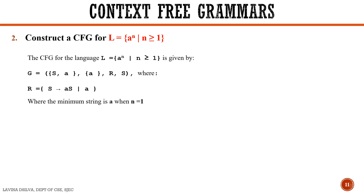We can conclude the grammar as G equals V sigma R S, where V equals {S, A}, sigma equals {A}, and the rule set R equals {S tends to AS, S tends to A}. Here the minimum string is A when N equals 1, so there is no epsilon rule, unlike the previous example.